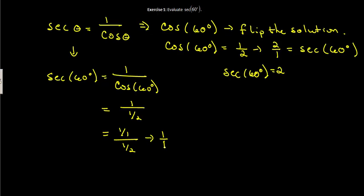So you take the one on the top and multiply it by the reciprocal of the bottom. We go across here, across here. We end up with 2 over 1 which is 2. So there's again the secant of 60 degrees.